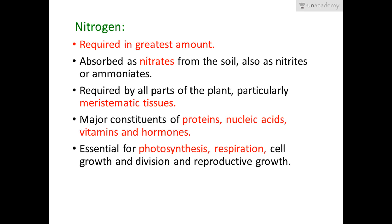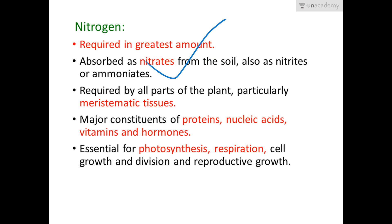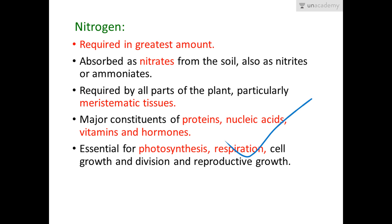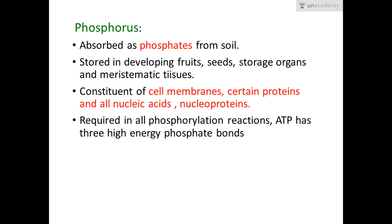Nitrogen is required in the greatest amount among mineral elements in a plant. It is absorbed as nitrates — ammoniates are converted to nitrates because they are toxic to the plant. It is required by all parts of the plant, particularly meristematic tissues, since they are dividing and need amino acids for growth. Nitrogen is a major constituent of proteins, nucleic acids, vitamins, and hormones, and is essential for all metabolic pathways including photosynthesis, respiration, cell growth, division, and reproduction.